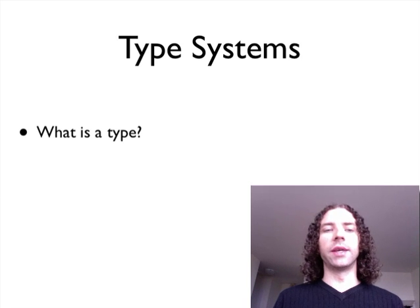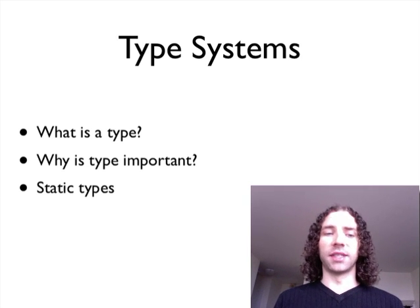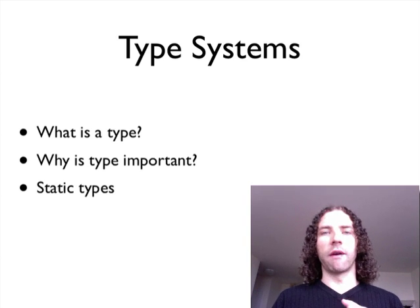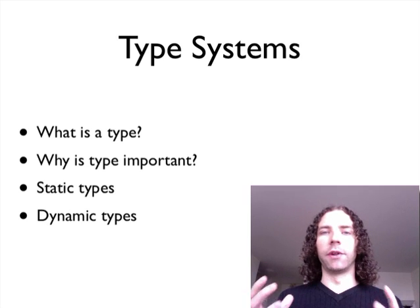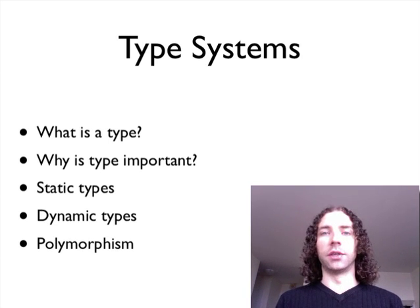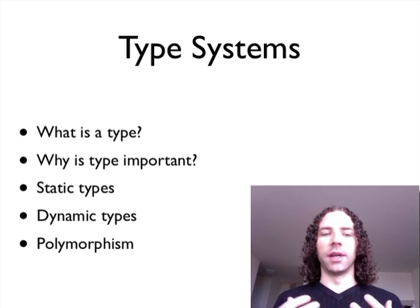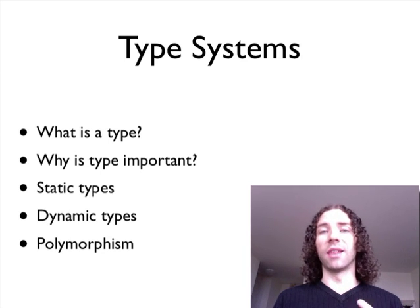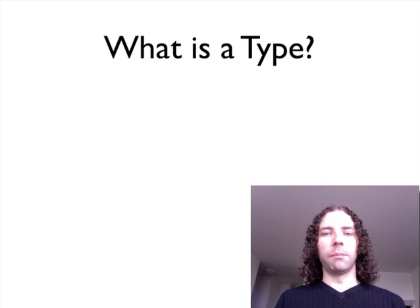So first of all I'm going to go through what is a type and why is a type important. Then I'm going to talk about the simple example of type systems, which is static type systems where everything is very fixed — you know specifically what something is. Then I'll talk about the other extreme, which is dynamic type systems, where everything is very fluid and you can't really be sure what something is until you try to use it. And just to finish up I'm going to talk a bit about polymorphism, which you can kind of view as a way of getting the best of both worlds between static and dynamic, but it's actually a little different than that. You hear people talk about this a lot in object-oriented environments — it's a popular buzzword, but it extends beyond that.